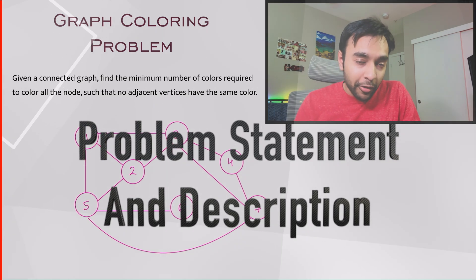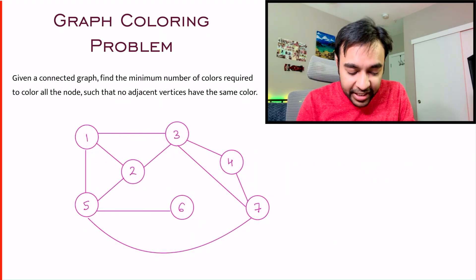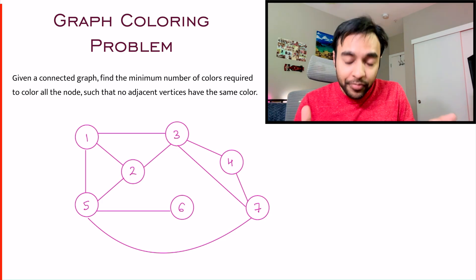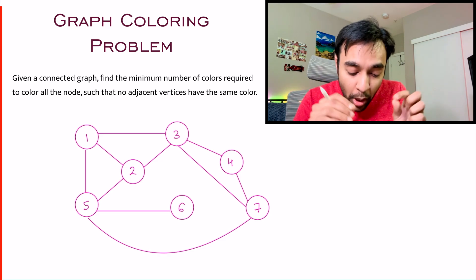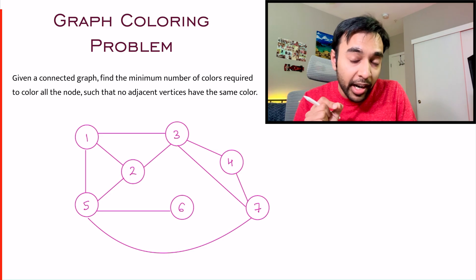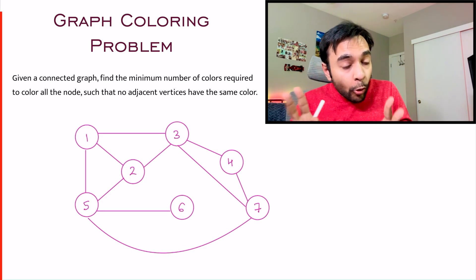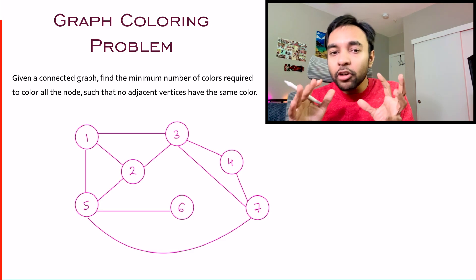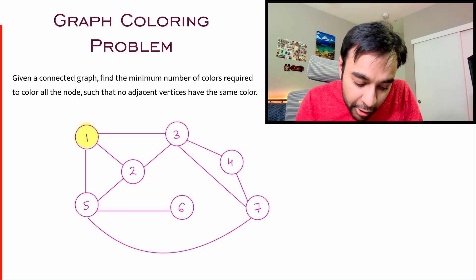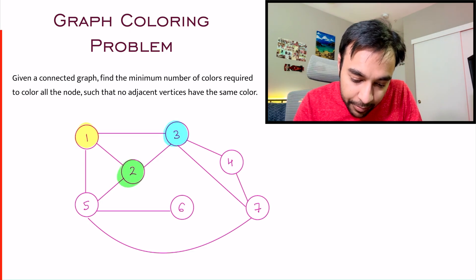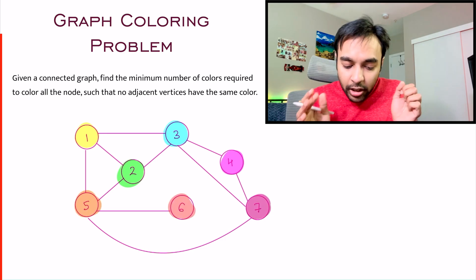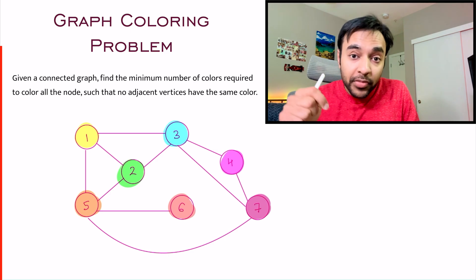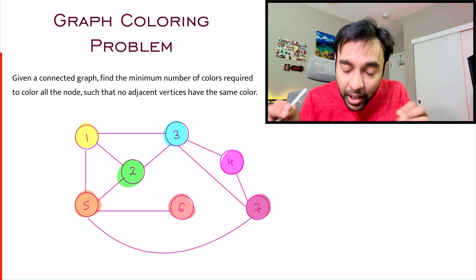Let us say you have this graph in front of you. As you can see, it has seven vertices and some of them are connected to one node, some of them are connected to multiple nodes. The problem statement says that you have to find the minimum number of colors required such that no two adjacent vertices should be of the same color. If you notice, one method of coloring is very natural.